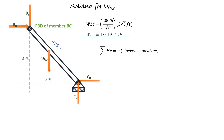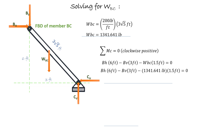Let's take a summation of moments about C to eliminate the reaction forces at C, since we don't need those values — we are focusing on pin A. So: BH times 6 minus BV times 3 minus WBC times 1.5 feet equals zero. Substituting the value of WBC, we get Equation 4: 3BV minus 6BH = −2012.462.